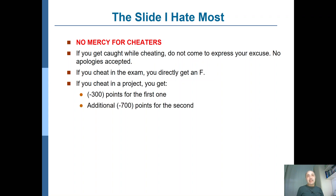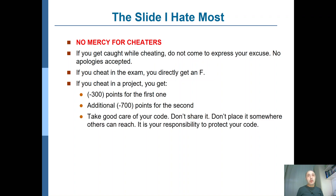If you try cheating a second time, you will get minus 700 points for the second offense. Together with minus 300, that makes minus 1000 points from the projects — so it means you have failed. Take good care of your code. Don't share it, don't place it somewhere others can reach, don't put it in open repositories in GitLab or other places. It is completely your responsibility to protect your code. If you are not able to protect your code, you'd better not take this course.